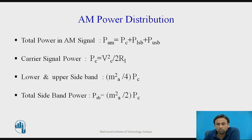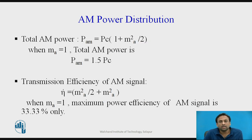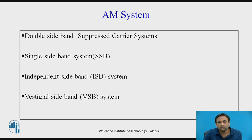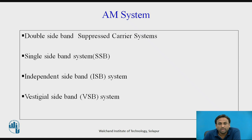Remember all these formulas: total power is Pc + P_LSB + P_USB; total AM power is Pc·(1 + m²/2); efficiency is m²/(2 + m²). The types of AM systems we will study include double sideband with suppressed carrier (DSBSC), single sideband (SSB), independent sideband (ISB), and vestigial sideband (VSB), which is used in TV transmission.